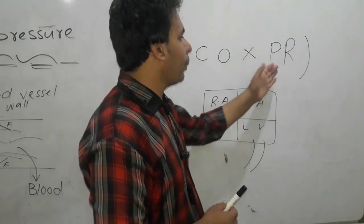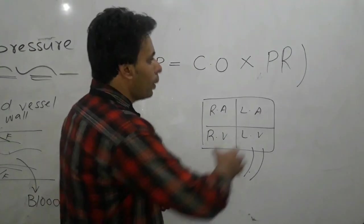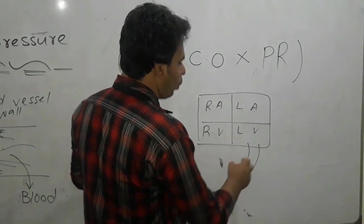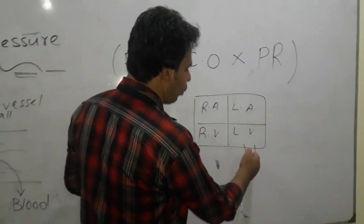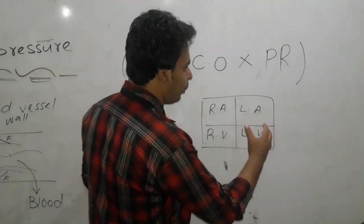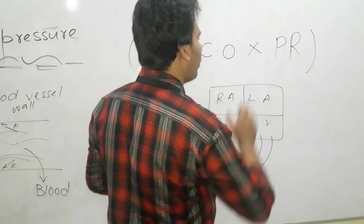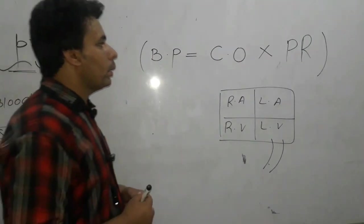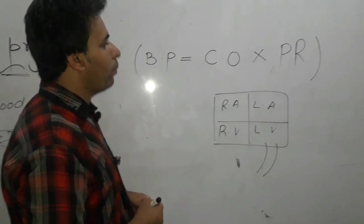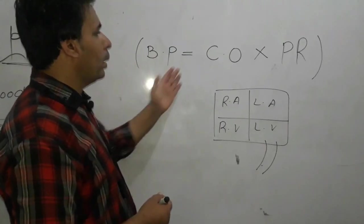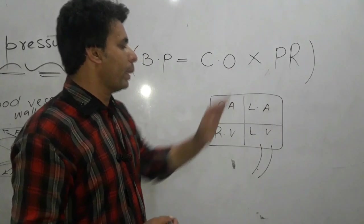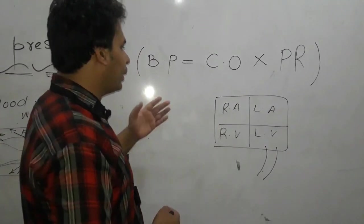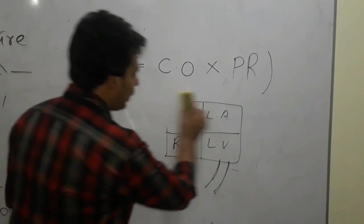Now you have to know about peripheral resistance. Peripheral resistance means the resistance which is present in the way of your blood in the blood vessel. Now the relationship of your BP with your cardiac output and peripheral resistance is direct.